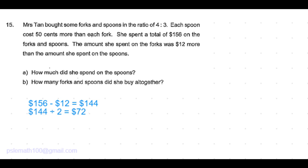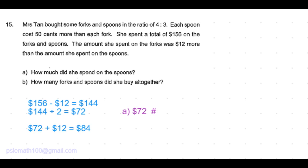So 144 divided by 2 is equal to 72 dollars. She spent 72 dollars on the spoons — that's the answer to Part A. And 72 dollars plus the 12 dollars is equal to 84 dollars, which is what she spent on the forks.